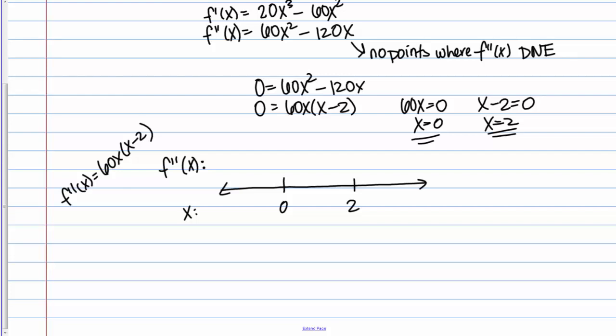The shortcut I do is use a factored form. I pick a test point. In this first interval, for example, I could pick negative 1. Then I just look at the sign of each factor. If I plug in negative 1 to this factored form, 60 times negative 1 is a negative. Negative 1 minus 2 is a negative. I have a negative times a negative, which is a positive.